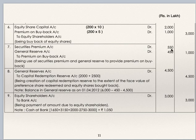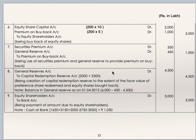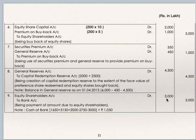Securities premium account debit 550, general reserve account debit 450, to premium on buyback 1000. Premium on buyback is 1000, securities premium has only 550, so 1000 minus 550 equals 450 to be taken from general reserve as balancing figure. Next entry is transfer to CRR: general reserve account debit to capital redemption reserve account 4500. This is 2000 equity share capital bought back plus 2500 preference share capital redeemed, totaling 4500 transferred to capital redemption reserve account. Equity shareholders account debit to bank 3000.